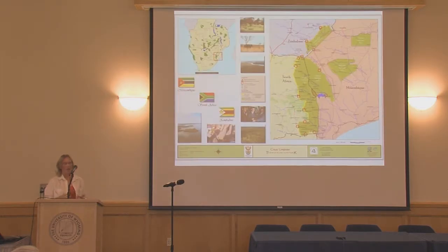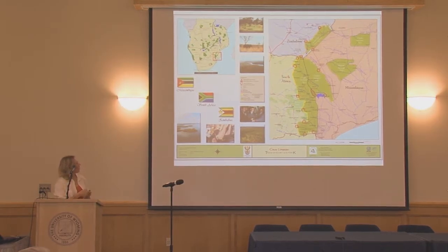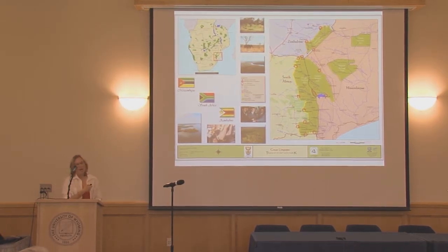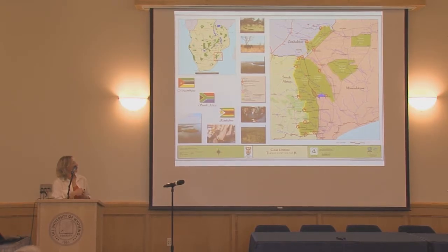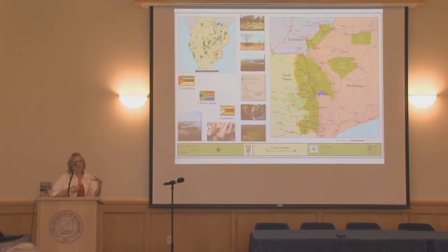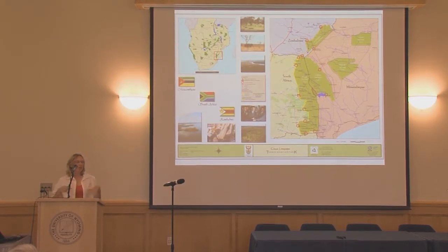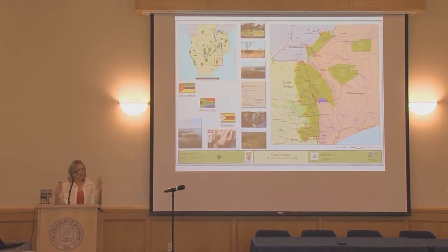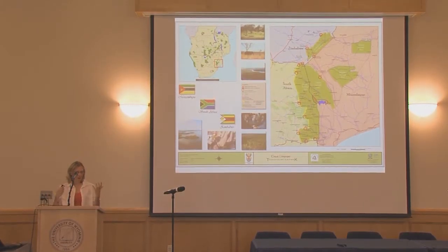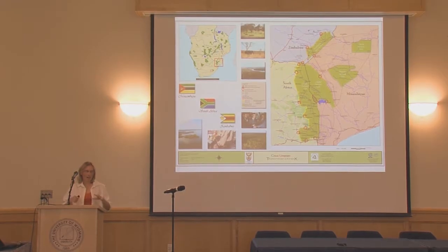Kruger sits on the boundary with Mozambique, and we are part of the Trans-Frontier Conservation Area, which also includes Mozambique and the Pona Reserve in Zimbabwe. So Kruger is a large park that spans across boundaries, giving us a good intact ecosystem that doesn't need a lot of hands-on management.